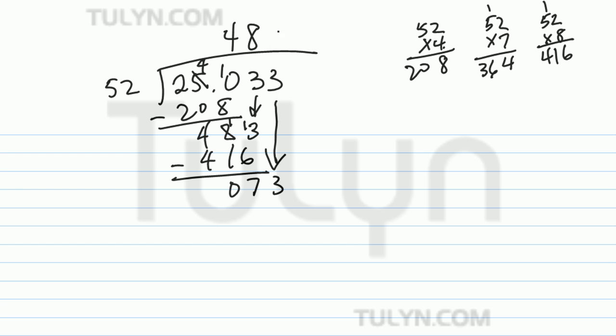73 divided by 52, it goes in once. 52, subtract that. 3 minus 2 is 1. 7 minus 5 is 2.